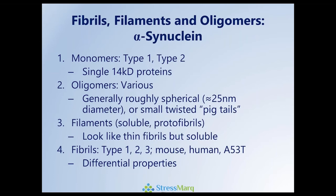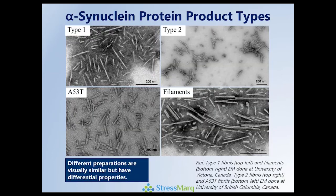Fibrils themselves are one of the larger areas from a product perspective, where we have type 1, type 2, and type 3, both mouse and human fibrils, the familial Parkinson's A53T mutant, and all of these have different properties from each other. If we just look from an EM perspective, type 1, type 2, A53T fibrils and filaments — to the unpracticed eye they all look like fibrils. However, they have quite different properties, so let's examine some of those.